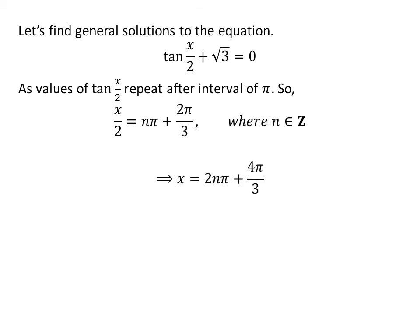Multiplying both sides of the equation by 2 we get x is equal to 2 times n times pi plus 4 times pi upon 3. Further simplification gives us the general solution is 2 times n plus 1 times pi plus pi upon 3 where n is an integer.